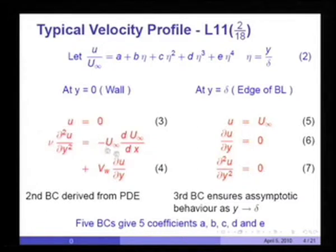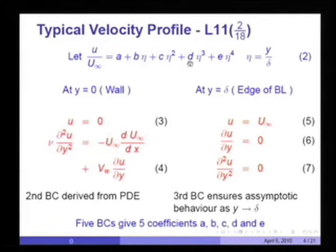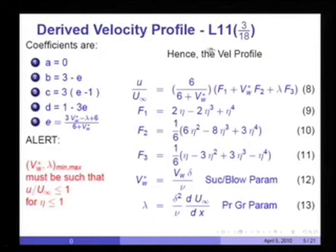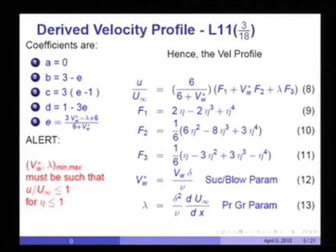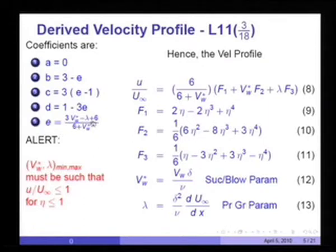Since the velocity approaches u∞ asymptotically, the continuity of the first derivative du/dy = 0 survives as y increases. Therefore, the fifth boundary condition is that d²u/dy² = 0 at the edge. So I have 5 boundary conditions which enable me to determine a, b, c, d, and e.